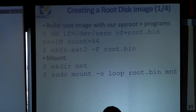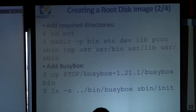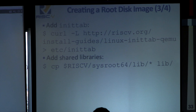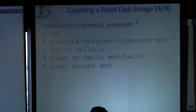Next we produce our root disk image. We create an empty image, format it as ext2, then mount it so we can dump the right files into it. We create the required directories, copy in the BusyBox binary into bin, symlink it as init, copy the inittab off the RISC-V website, and copy in those shared libraries we talked about earlier so we can actually run our programs. Finally, we can copy in any programs we compile ourselves — calling riscv64-unknown-linux-gnu-gcc on hello.c, copying that into the root disk image, then unmounting it.